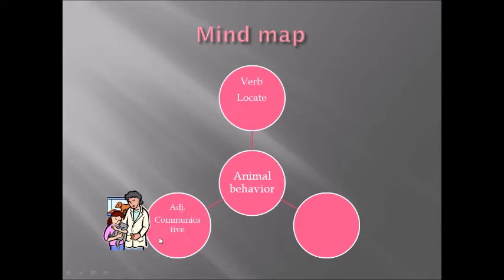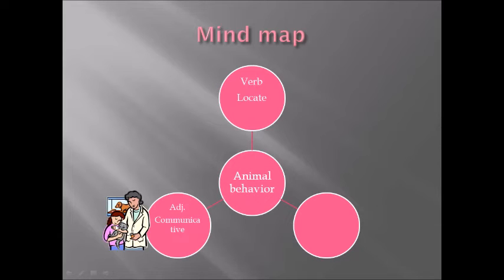Remember, it is not necessary for you to write the entire definition — only select a few keywords that will instantly make you think of that word. For example, the adjective communicative: the definition is a person with the quality of communication. I have chosen an image of a doctor because she seems to be communicative with the girl. Please complete this mind map in your notebooks.